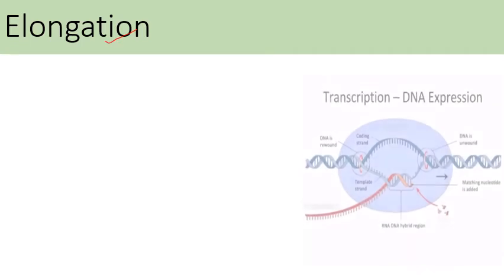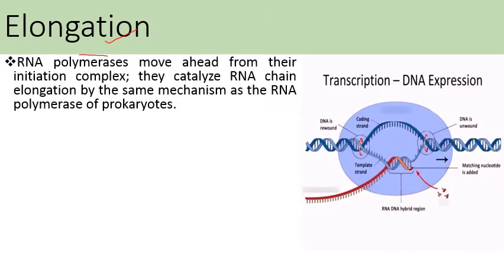The next step in eukaryotic transcription is elongation. RNA polymerase 2 moves ahead from the initiation complex and catalyzes RNA chain elongation by the same mechanism as RNA polymerase in prokaryotes.